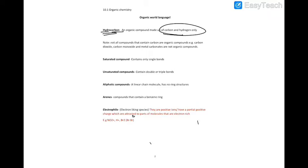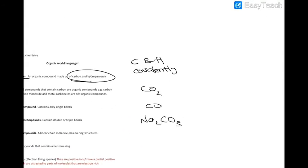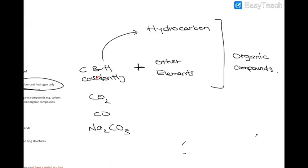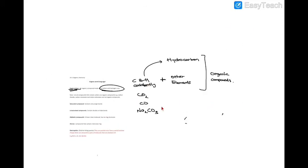Not all compounds, however, that contain carbon are organic compounds. For example, carbon dioxide, carbon monoxide, metal carbonates. These are not organic compounds. So for it to be an organic compound, you should have carbon and hydrogen covalently bonded and you can have other elements as well. But when there's just carbon and hydrogen, it's called hydrocarbon and these are all organic compounds and these are not.